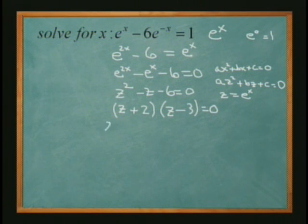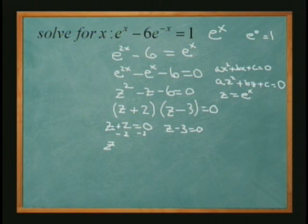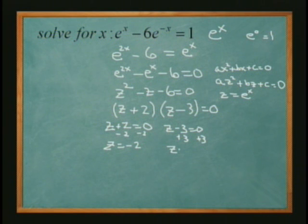So now I'm going to set each quantity to 0. So I'm going to subtract 2 here. So z is equal to negative 2. And 3 over here. Z equals 3.